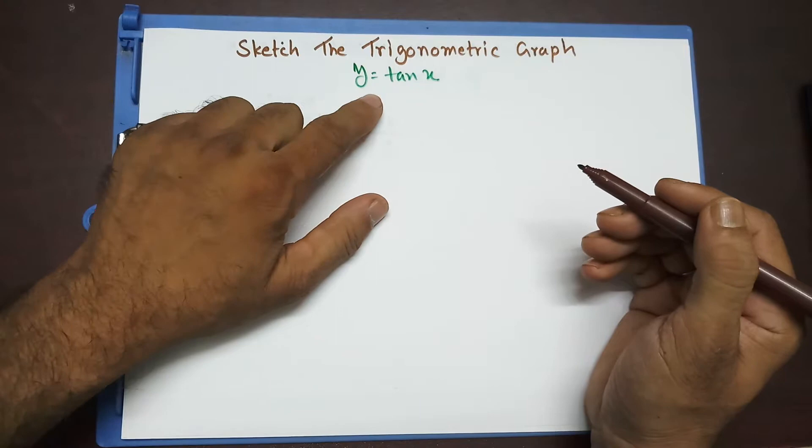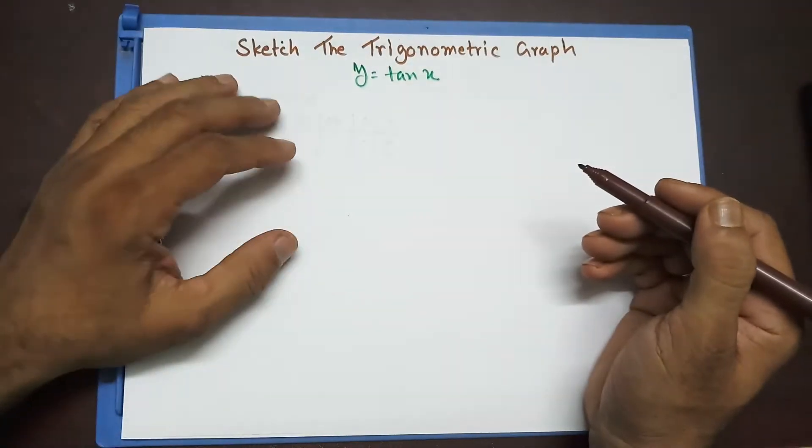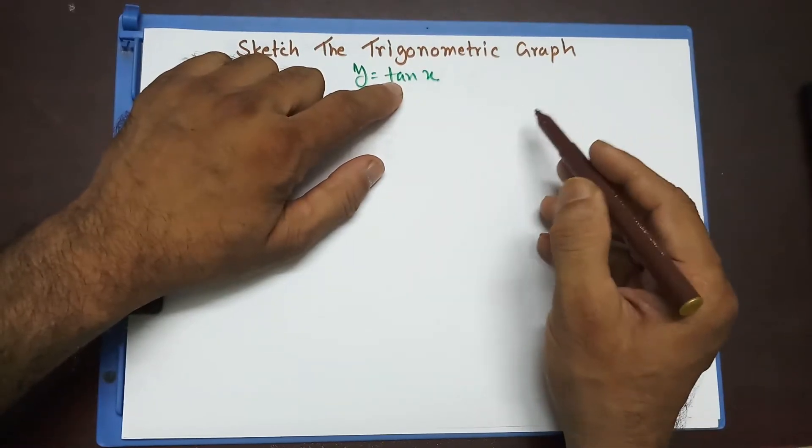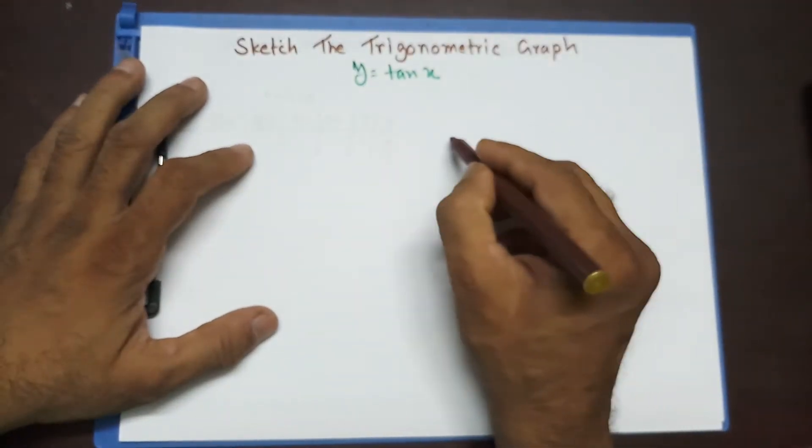Now, y equal to tan x is a little different than the sin x and cos x. The reason is it doesn't follow that 360 degree for one cycle. It follows something else. I'm going to look at it in a second.